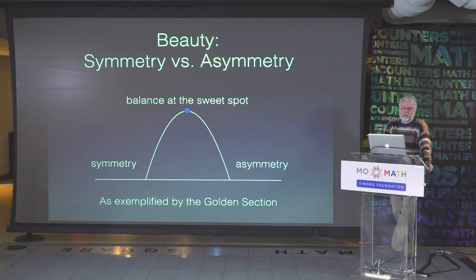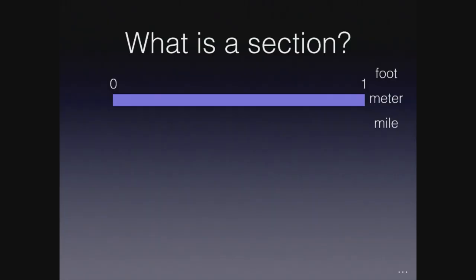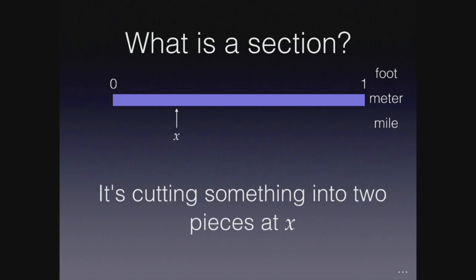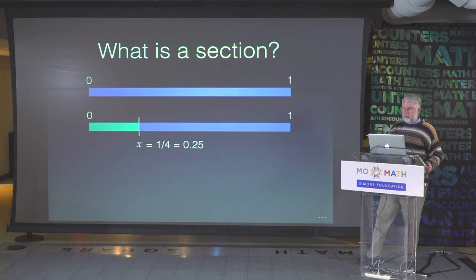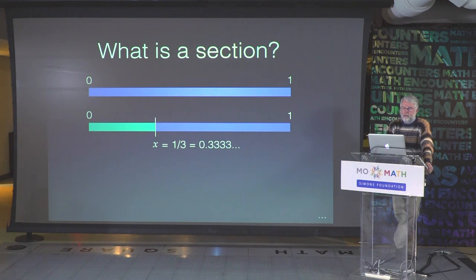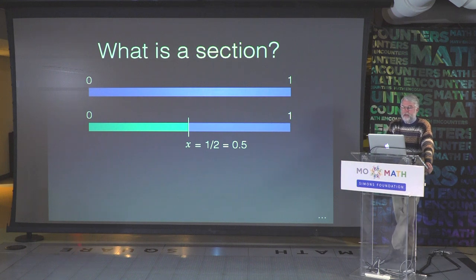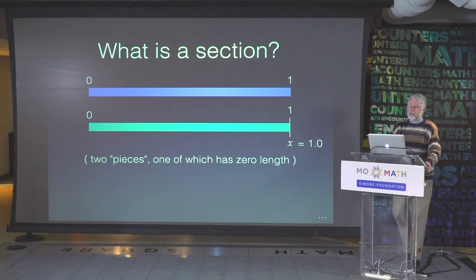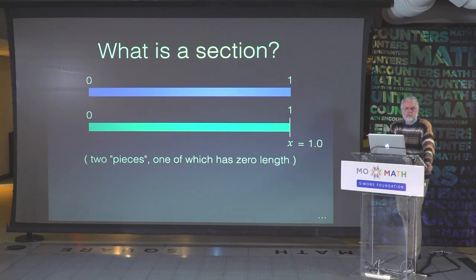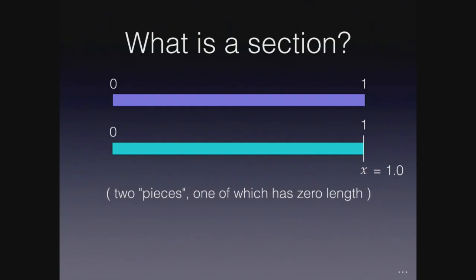I'll do a little bit of simple math, then the rest of the talk will be about pictures that embody these mathematical concepts pictorially. So what is a section? A section is when you take something — a foot, a ruler, a yardstick, a mile — and cut it into two pieces at some point. You choose a point, call it x, and divide there. You can choose a quarter and get three quarters, or a third and two thirds, or a half and a half — that's symmetric. In mathematics, you can even divide something into two pieces where one is nonexistent, so x equals one or zero, which is useless in the real world but elegant mathematically.